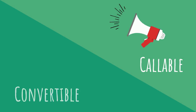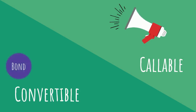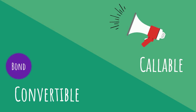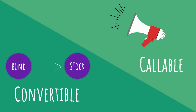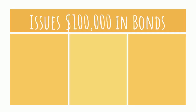Bonds can be callable, which means that the company can pay them off early before their maturity date. Bonds can also be convertible, which means that instead of repaying the bonds with cash, the bonds can be converted into shares of the company's stock.